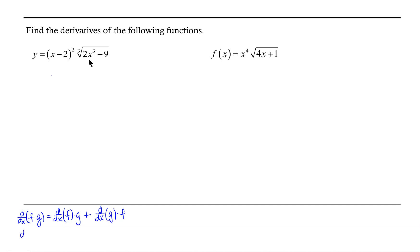Additionally, we want to remember the chain rule: the derivative of a composition of functions f of g of x is equal to the derivative of the outer function with the argument remaining unchanged, times the derivative of the inner function or the argument. Those are the two major rules we will be using today.